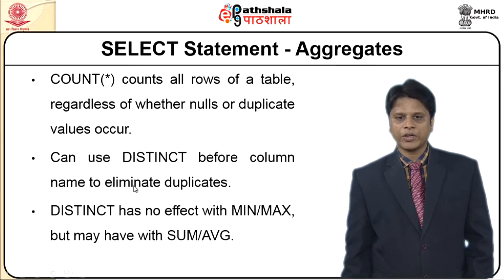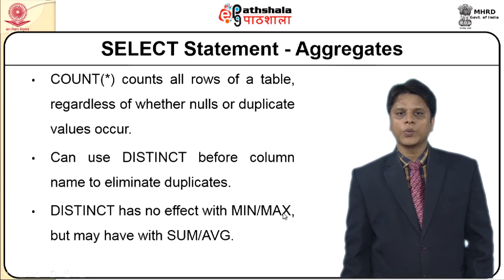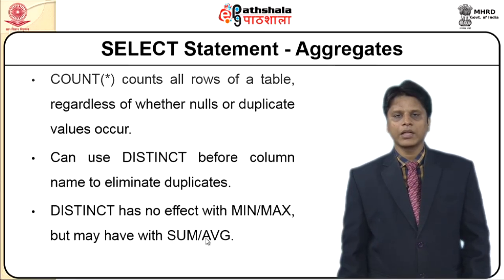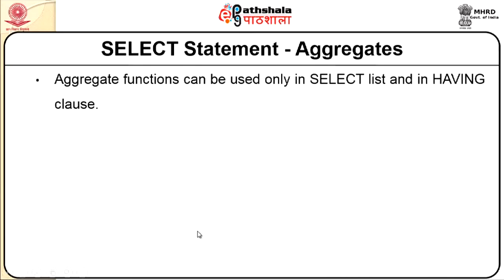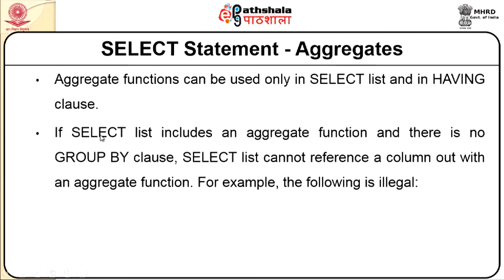Aggregate functions can be used only in the SELECT list and in the HAVING clause. If the SELECT list includes an aggregate function and there is no GROUP BY clause, the SELECT list cannot reference a column without an aggregate function. For example, you cannot write: SELECT staff_number, COUNT(salary) FROM staff — this would be invalid.